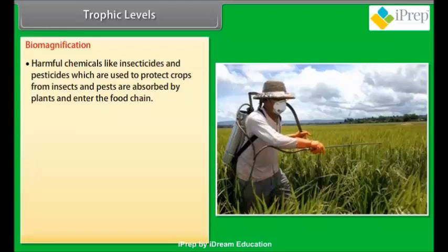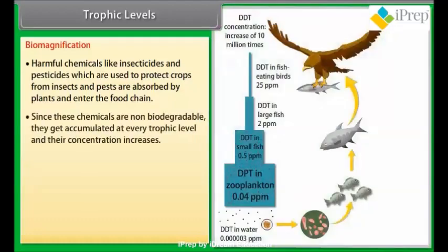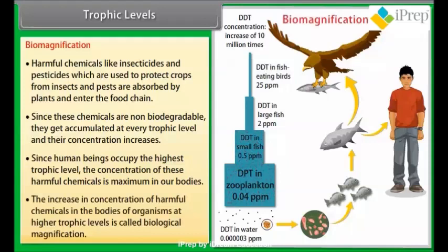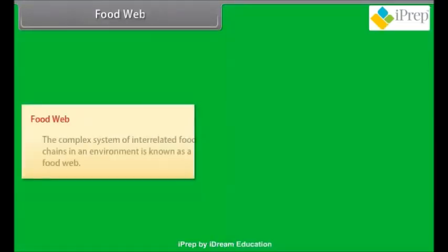Harmful chemicals like insecticides and pesticides used to protect crops are absorbed by plants and enter the food chain. Since these chemicals are non-biodegradable, they get accumulated at every trophic level and their concentration increases. Since human beings occupy the highest trophic level, the concentration of these harmful chemicals is maximum in our bodies. The increase in concentration of harmful chemicals in organisms at higher trophic levels is called biological magnification.